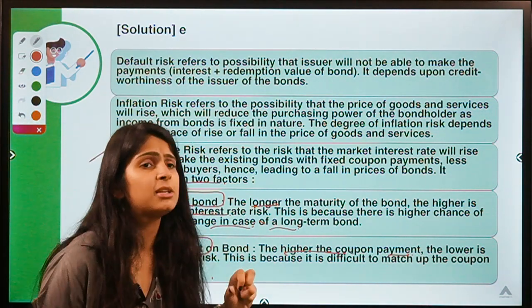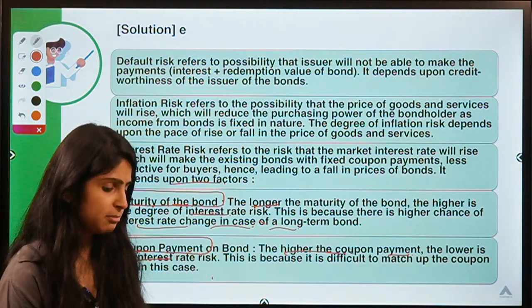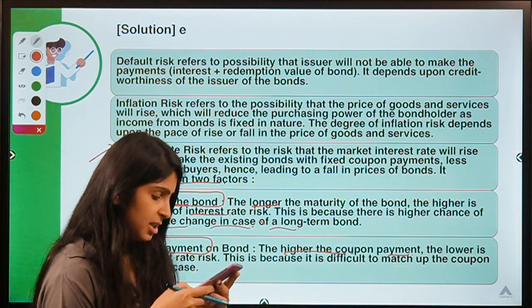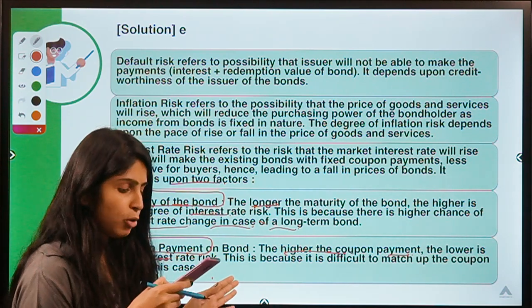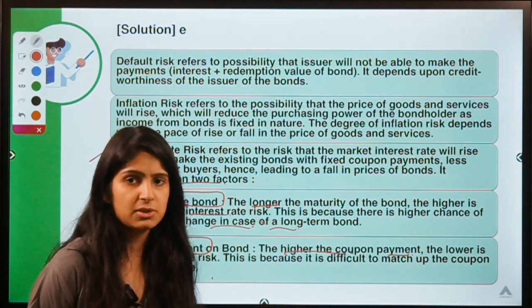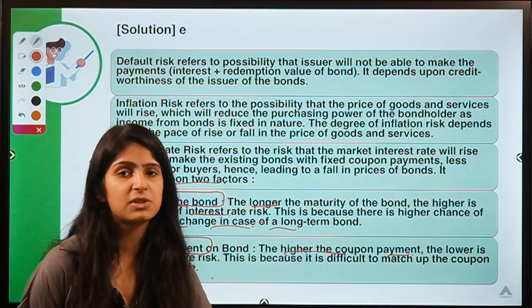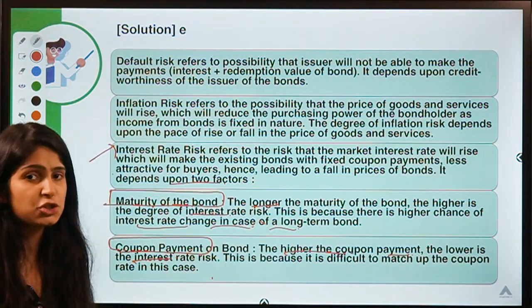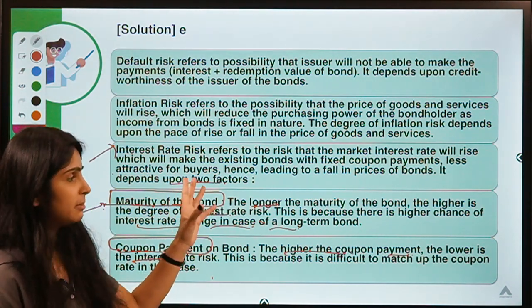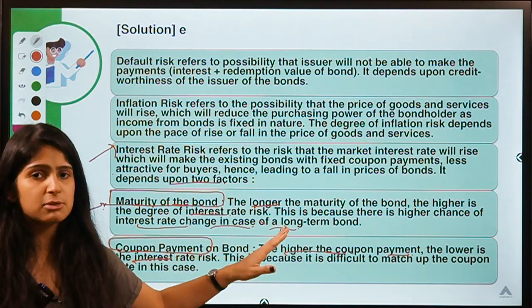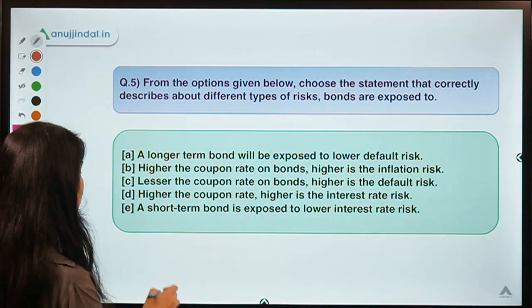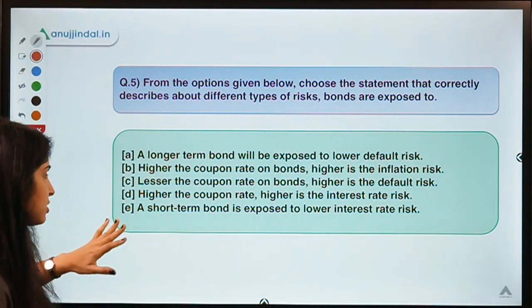We discussed this in a previous video and many viewers had doubts. Amit was asking: why are high coupon bond prices less sensitive to market interest rate changes? This is the same logic — higher the coupon payment, lower the interest rate risk. High coupon bonds are less sensitive to interest rate changes because it is difficult for competing investments to match up to that coupon payment. I hope Amit's doubt is cleared. For those having problems linking maturity to interest rate risk, I hope this clarifies it. Short-term bonds are exposed to lower interest rate risk because there are fewer chances of interest rate changing.